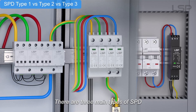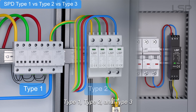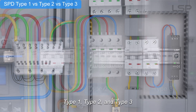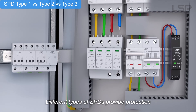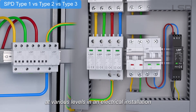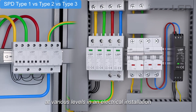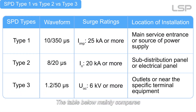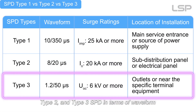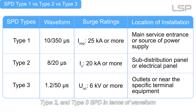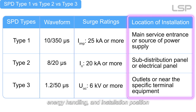There are three main types of SPD – Type 1, Type 2, and Type 3. Different types of SPDs provide protection at various levels in an electrical installation. The table below mainly compares the differences between Type 1, Type 2, and Type 3 SPD in terms of waveform, energy handling, and installation position.